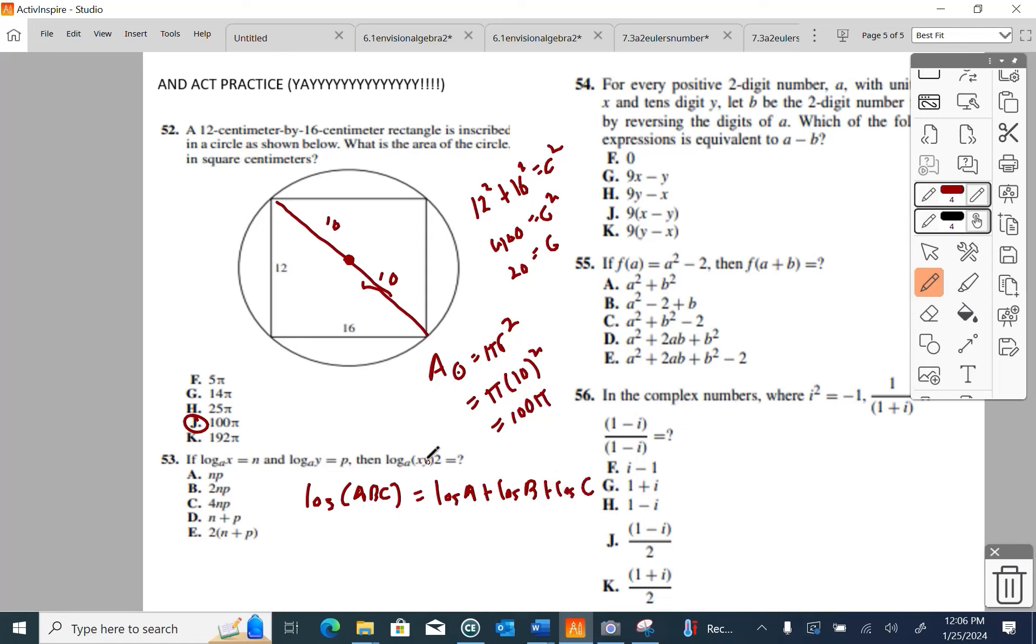So I can rewrite this guy right here, and the 2, I'm going to put it out front, as 2 times the quantity of log A of X plus log A of Y. Now I'm going to use substitution. Log A of X is N, log A of Y is P. So I get to replace this guy with N and this guy with P. No calculator. Logarithms on the ACT are designed to be done without technology.